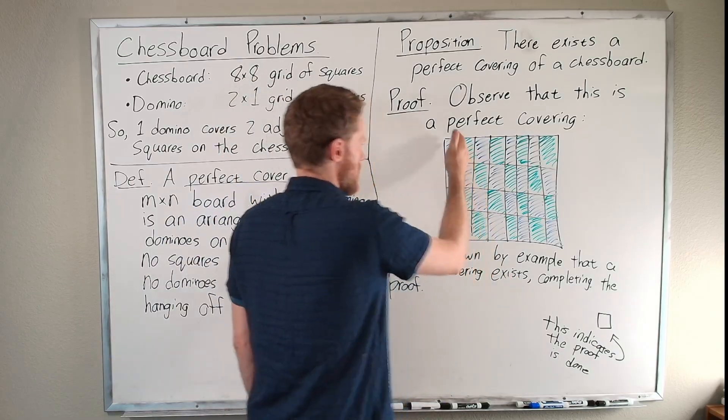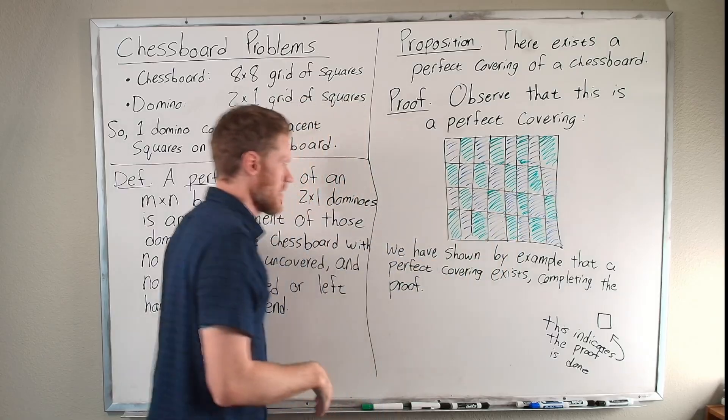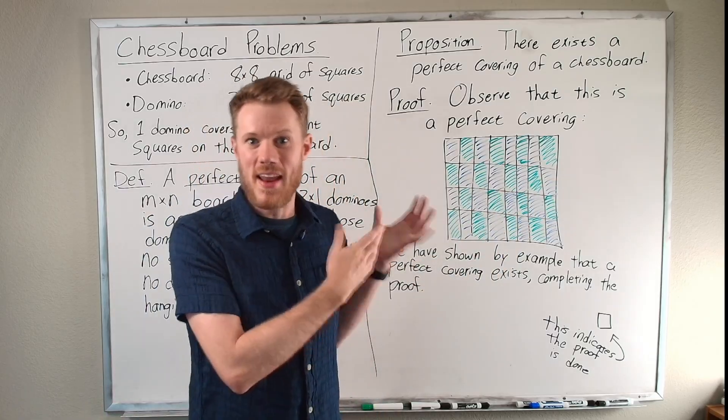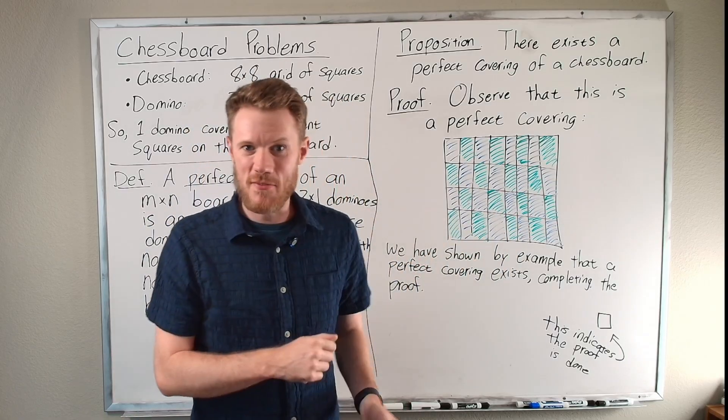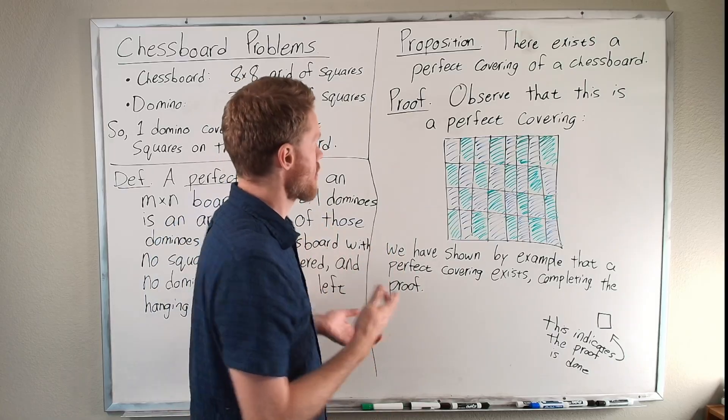Well, yes, you could have four dominoes in the first column, four in the second, four in the third, etc. And there you go. That is my example. We have proven that there exists a perfect covering of a chess board.